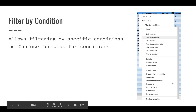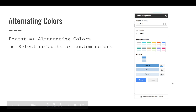In one of our next videos, we'll get into those different filter options. You can also choose alternating colors, which is nice if you need to format your data and make it a little bit easier to view. Under Format > Alternating Colors, it applies a great set of formatting to your sheet.